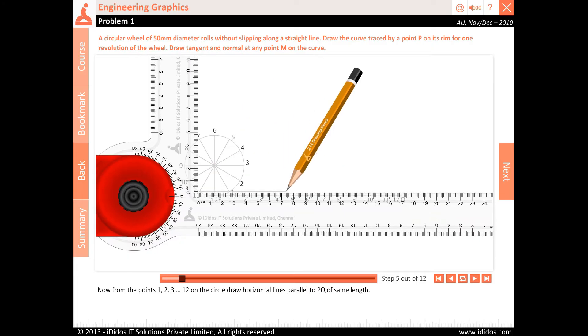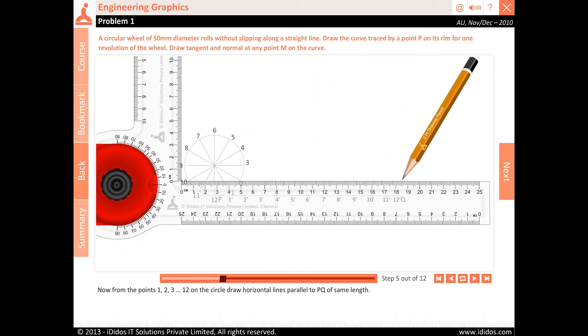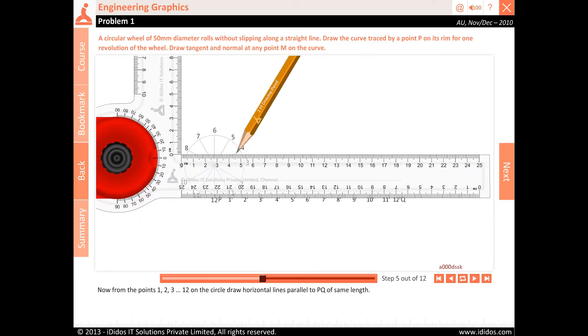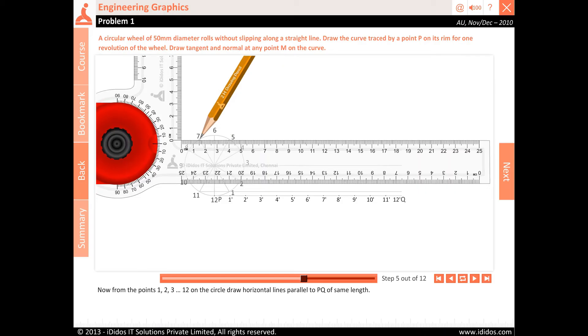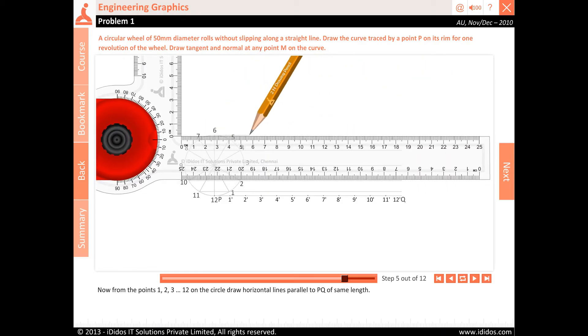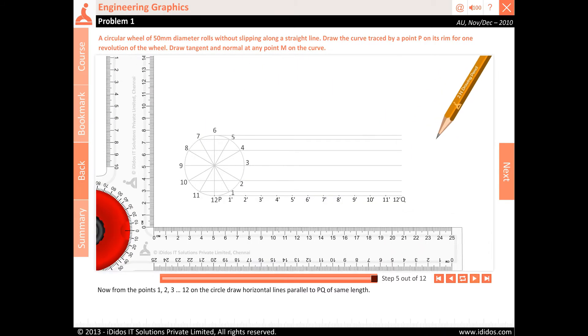Now from the points 1, 2, 3, 4, 5, 6, 7, 8, 9, 10, 11, 12 on the circle, draw horizontal lines parallel to PQ of the same length.